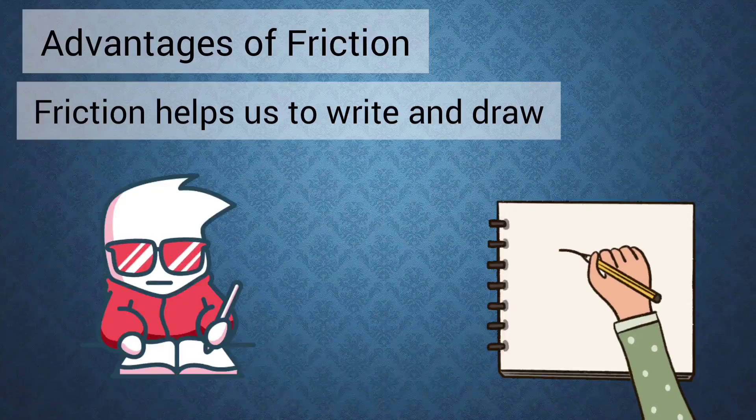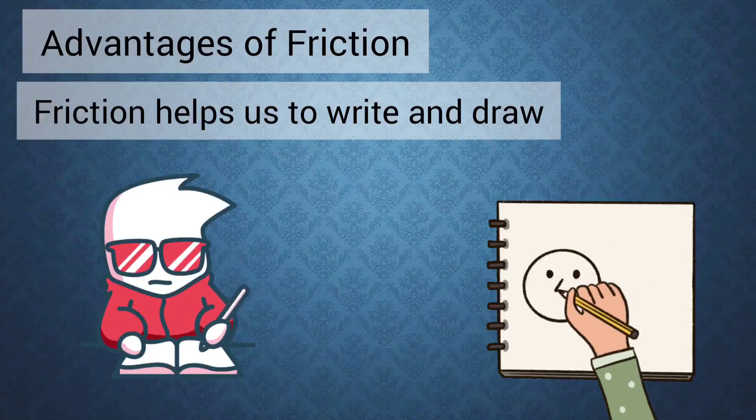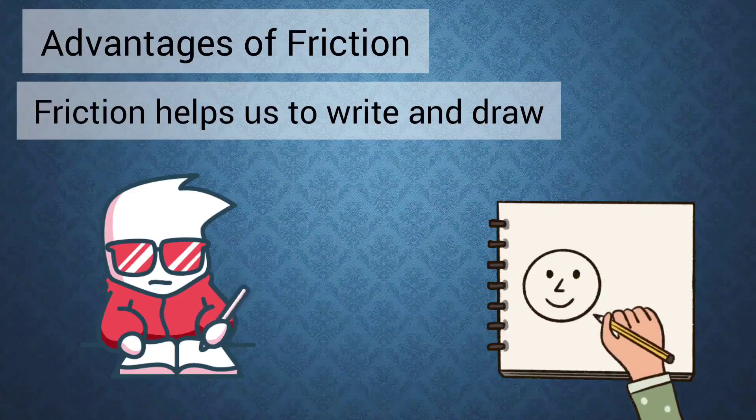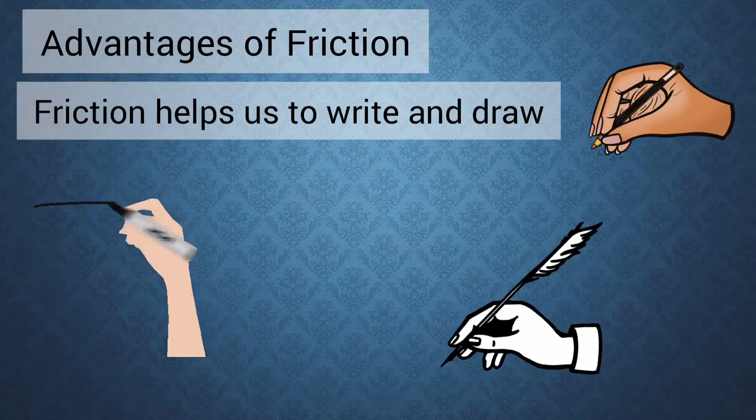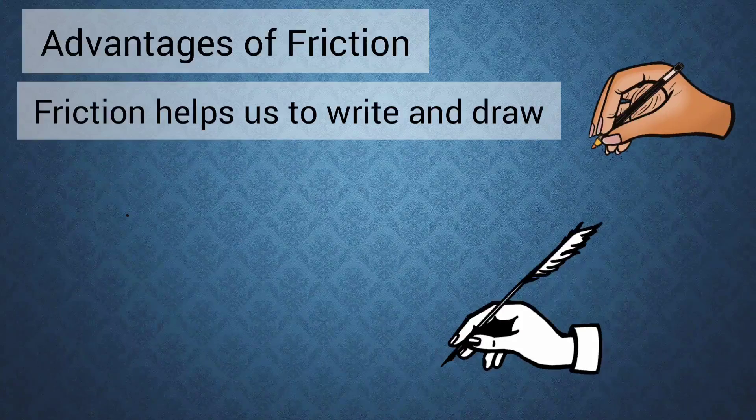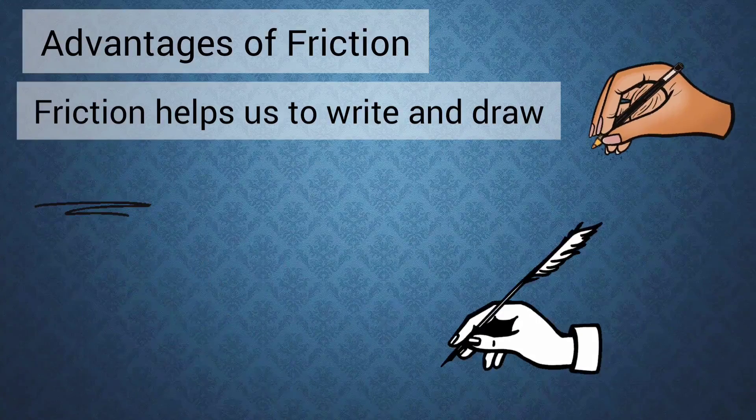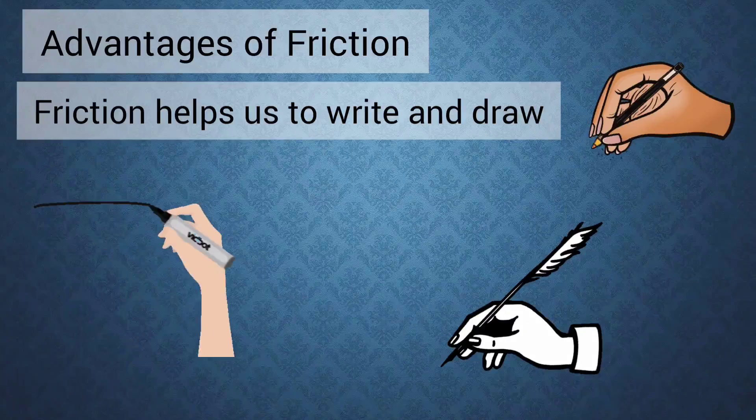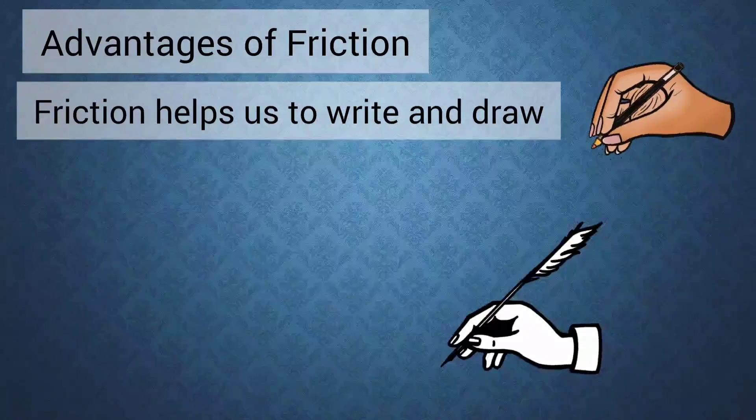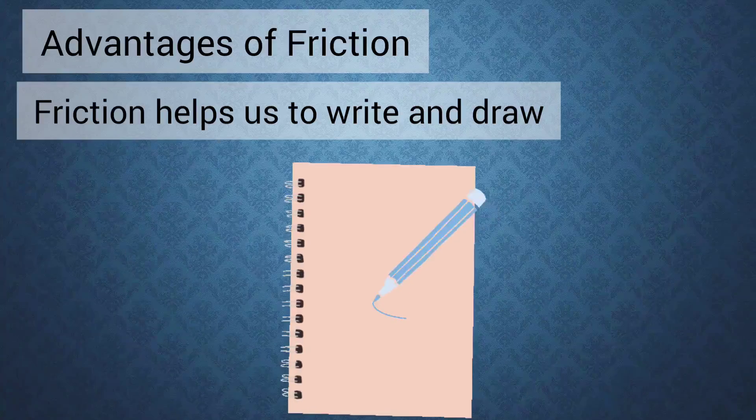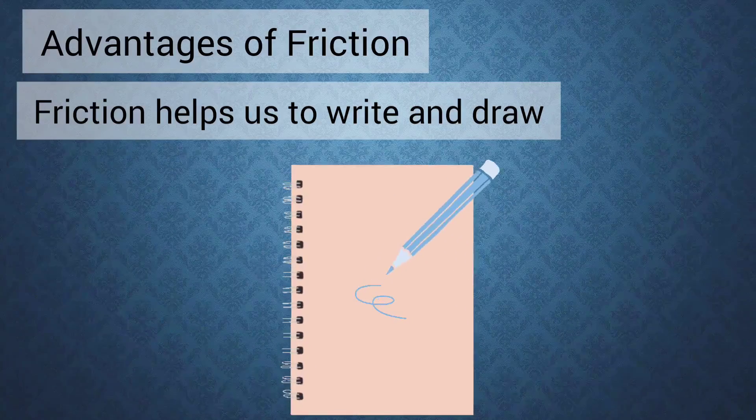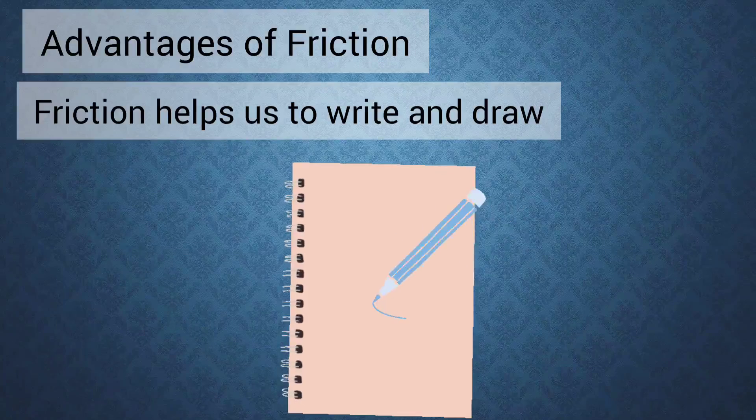Friction helps us to write and draw. If there will be no friction we will not be able to hold a pen vertically. It is the friction that opposes slipping and helps us to hold the pen. Also there is friction between our pen and the paper which helps the pen from slipping on the paper.